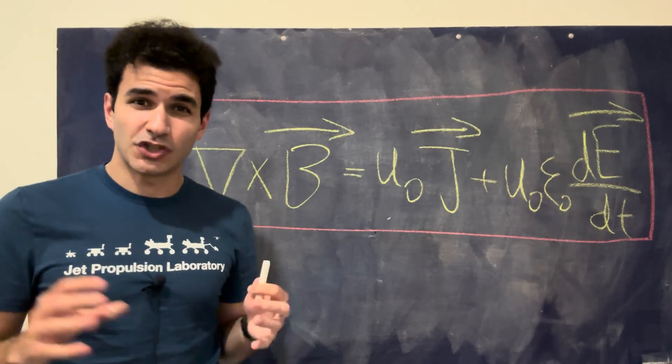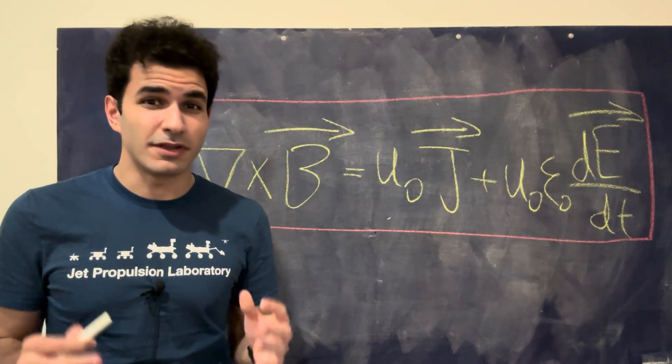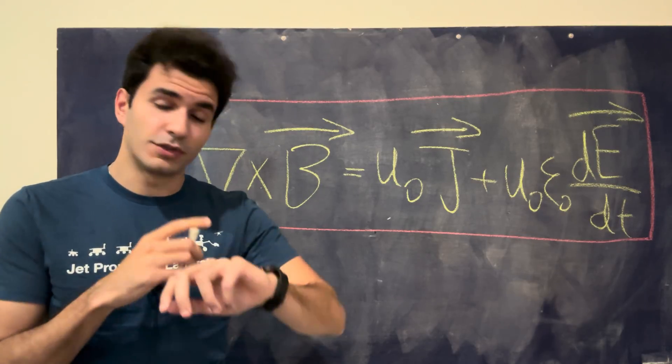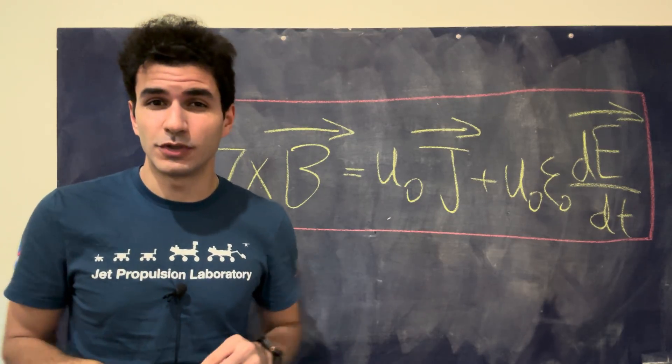In this video, I'm going to explain to you the equation that shaped the modern world, and I mean everything in the modern world, especially technology-based. This includes AI, this includes electronics, this includes everything that we use in our day-to-day life.